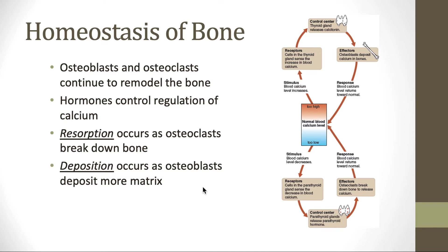Deposition is the process by which osteoblasts deposit more calcium to make more bone matrix. Looking at our feedback loop: if calcium levels get too high, receptors in the thyroid gland detect this change. The control center is the endocrine gland — this is regulated through the endocrine system, not the nervous system. The thyroid gland releases a hormone called calcitonin, which causes osteoblasts to deposit extra calcium in the bones so that blood calcium levels return to normal.